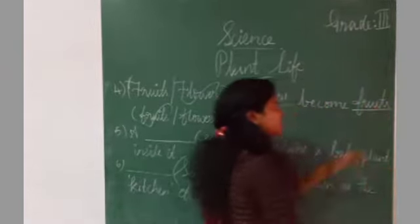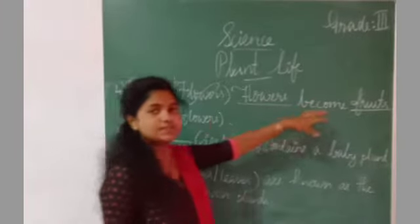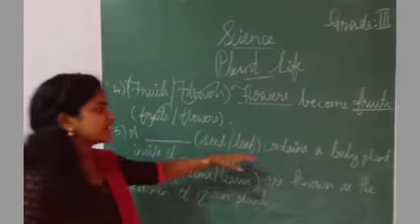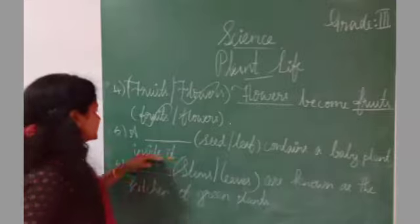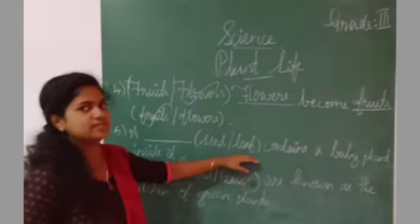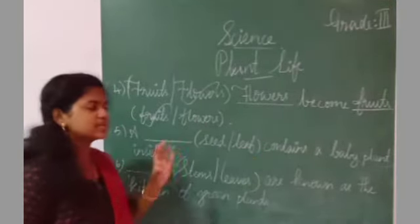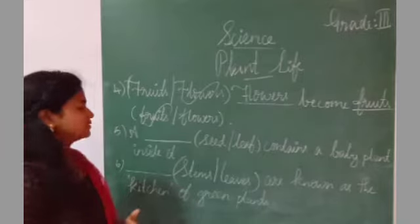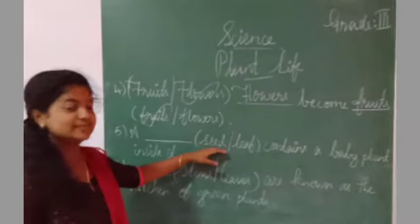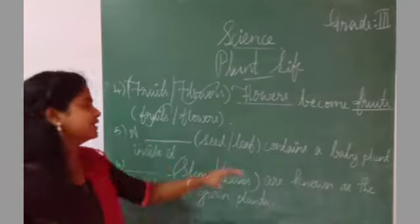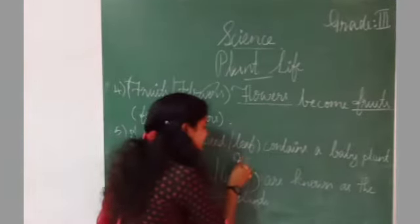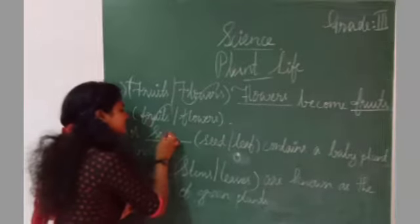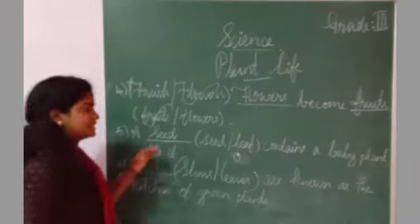Next one: A dash contains a baby plant inside it. Seed or leaf. Which one is correct? A dash contains a baby plant inside it. Seed or leaf. Tell me. Yes, very good, seed, right? A seed contains a baby plant inside it. Seed, S-E-E-D.